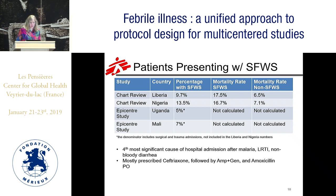Some data from the studies we did to estimate the burden: we did a chart review in MSF-supported programs in Liberia and Nigeria, mainly pediatrics. The percentage of patients with severe febrile illness without an unknown source was around 10%, and the mortality rate was 16 to 17% — actually double the mortality rate of those not presenting with severe febrile illness. It was also the fourth most significant cause of hospital admission after malaria, lower respiratory tract infection, and non-bloody diarrhea. The antibiotic most commonly prescribed was ceftriaxone, followed by ampicillin, gentamicin, and amoxicillin.